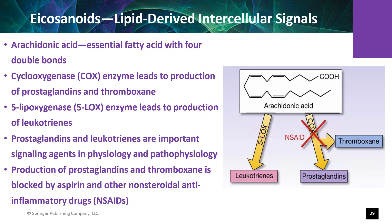The formation of inflammatory mediators from arachidonic acid follows two paths: the COX path, which is blocked by NSAIDs, and the 5-LOX path. Arachidonic acid is a precursor for lipid molecules that assist with inflammation, control blood flow and blood pressure, and have reproductive functions.